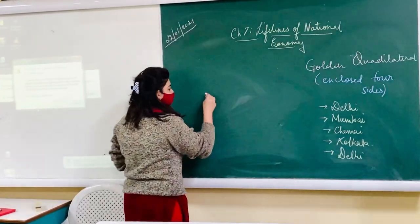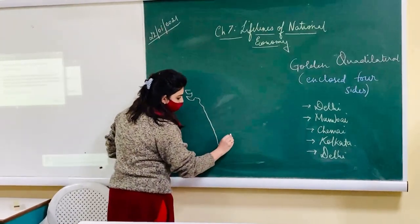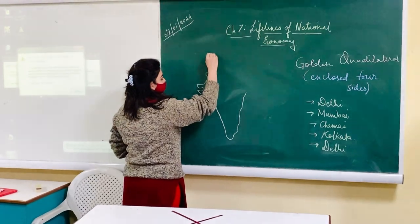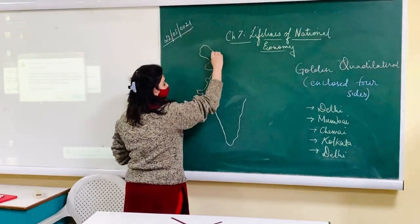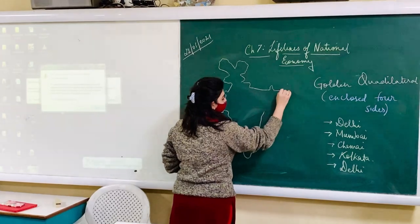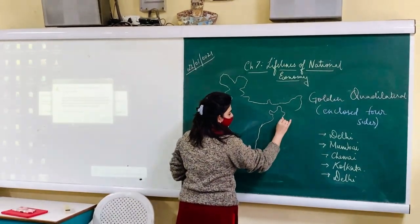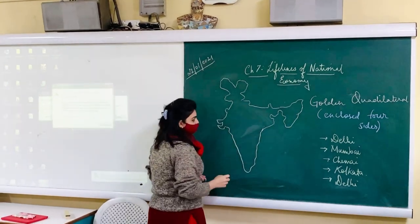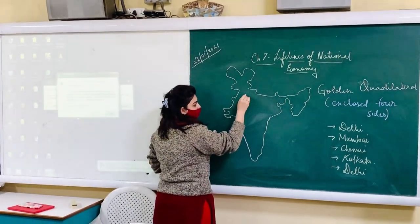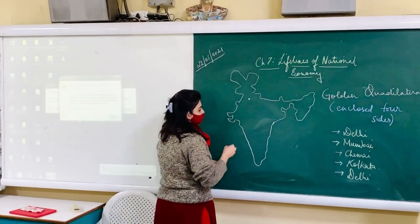So when we are talking about map pointing, we will actually be looking at which places are on the map. So if I am supposed to be showing you on the map of India where the four places are. So we have Delhi here.